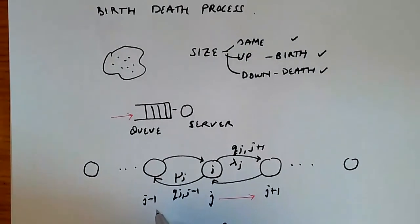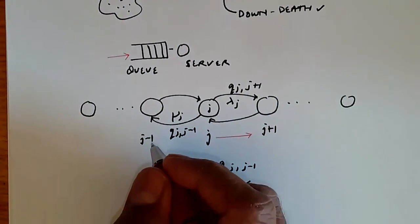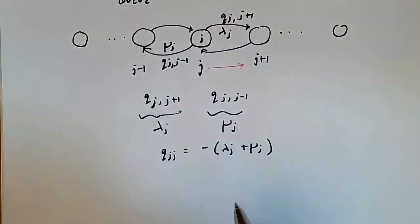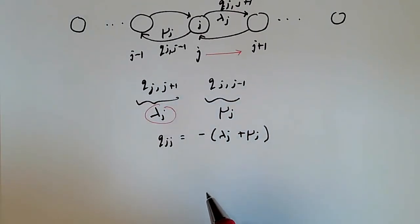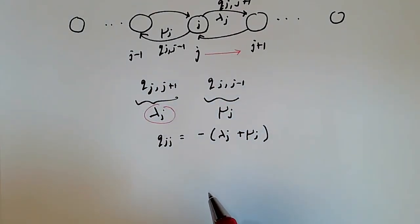This is always denoted in queueing theory with the notation lambda. So lambda j is the rate at which packets or events arrive into the system, into the population.